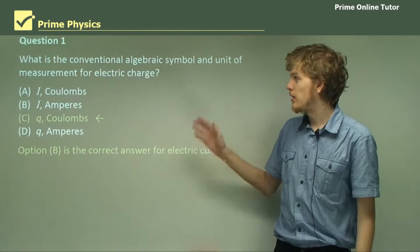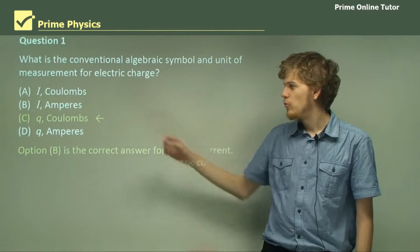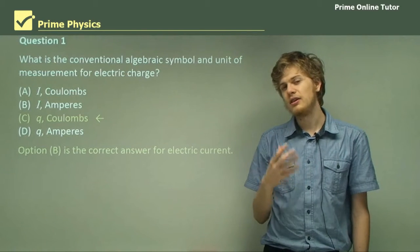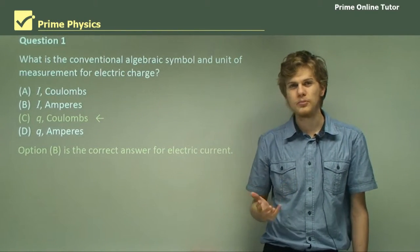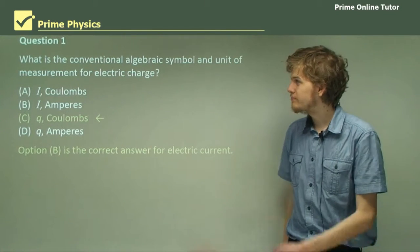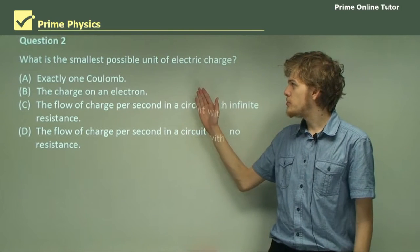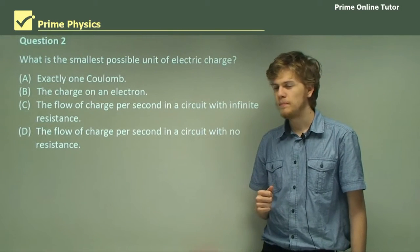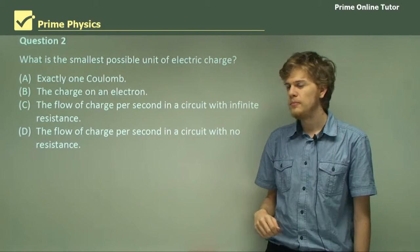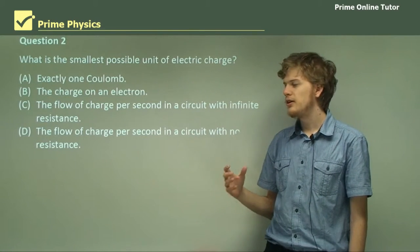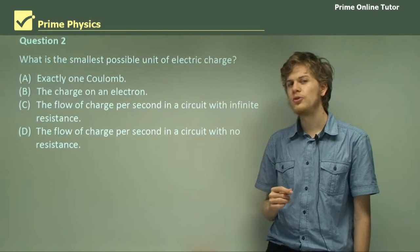If the question was asking about electric current instead, then the answer would have been B. We measure electric current as uppercase I in amperes, or amps for short.